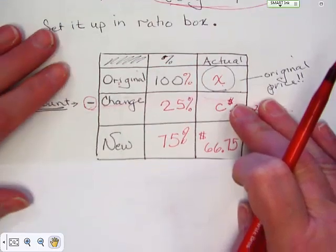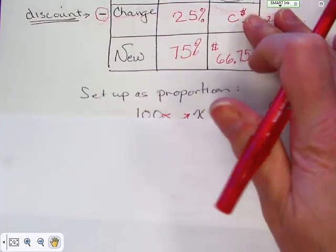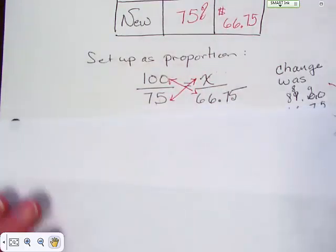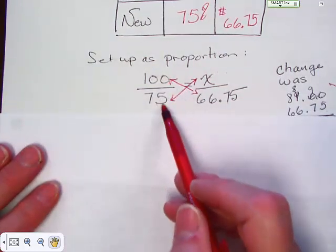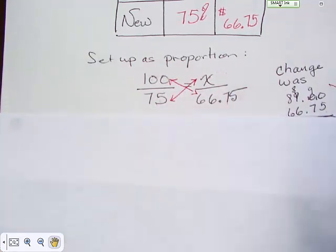So when we set it up, we're going to set it up as a proportion. And we end up with 100 over 75 equals X over 66.75. Again we can pretty much eliminate that middle row on this problem because we aren't even using any of the numbers out of it.